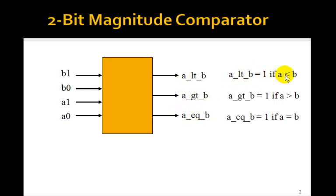A less than B will be equal to 1 if A is less than B, that is if A1, A0 as a 0 to 3 number is less than B1, B0 as a 2-bit number. If A is greater than B, then A greater than B will be equal to 1. And if A is equal to B, A equal B will be equal to 1.